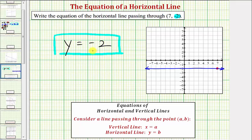So we can say in general, the equation of any horizontal line passing through the point (a, b) would have the equation y = b.